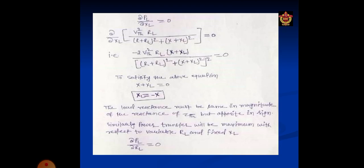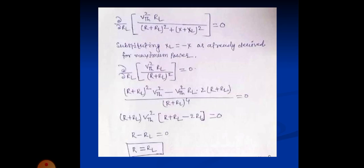The load reactance must be same in the magnitude of the reactance of ZTH but opposite in sign. Similarly, power transfer will be maximum with respect to variable RL and fixed XL, that means dPL upon dRL equal to 0. Again substituting the value XL equal to minus X as already derived from maximum power dP upon dXL. So now putting the value XL equal to minus of X that means X minus X equal to 0.